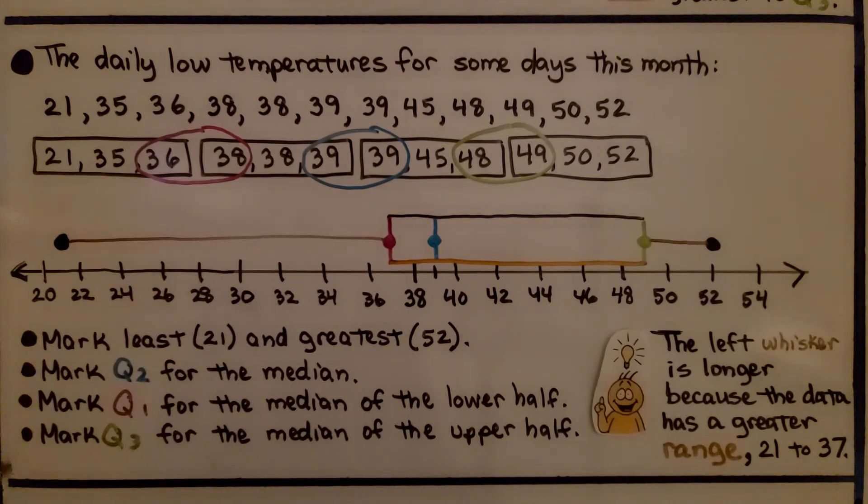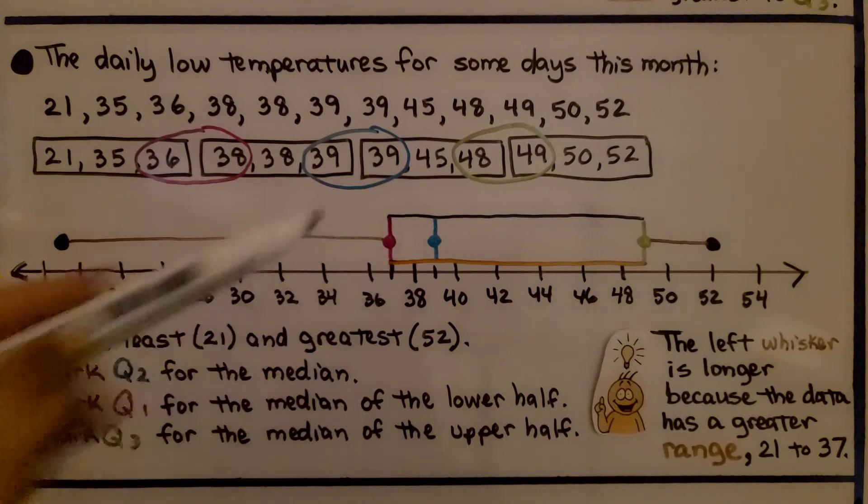We mark the first quartile Q1 for the median of the lower half. We have 36 and 38. So that's going to be 37. So that's going to be about right here.